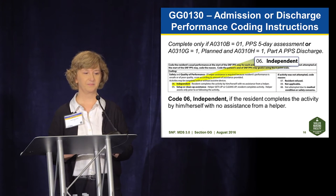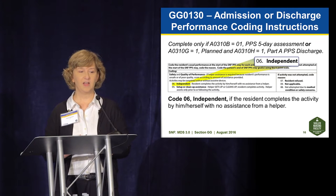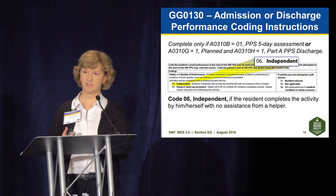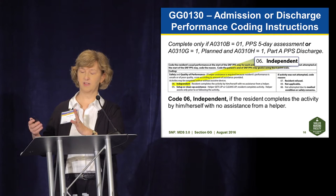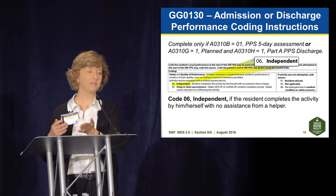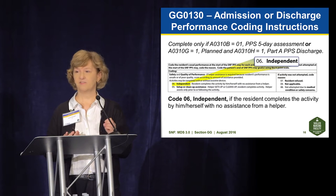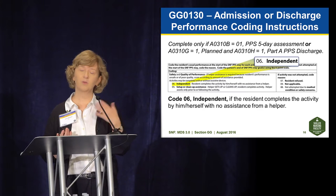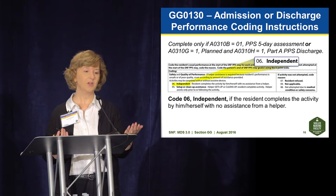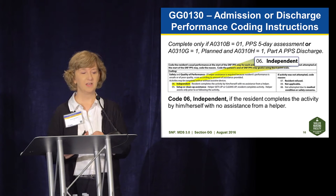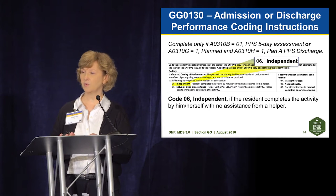The coding instructions: Section GG is completed on admission and discharge. If somebody has an unplanned discharge, the Section GG items are not on that data set — you won't see those items. If you indicate a planned discharge, you will see those items. The rating scale is a six-level independent scale, meaning a higher score indicates more independence. At the top, level 6 is called Independent — the resident completes the activity by themselves with no assistance from a helper.